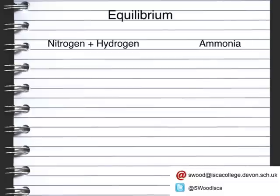We have come across equilibrium before when we looked at the production of ammonia. As stated in the title of the lesson, an equilibrium is a reversible reaction. Nitrogen and hydrogen will react to form ammonia, but at the same time ammonia will break down to form nitrogen and hydrogen. This symbol here shows that we have an equilibrium reaction.